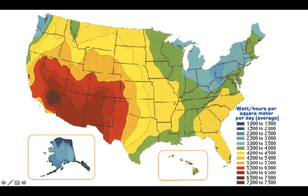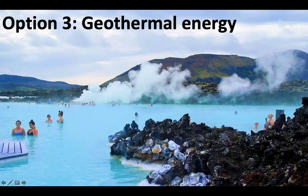This map shows solar resources in the United States. Unsurprisingly, the desert in the southwest has the highest solar potential.